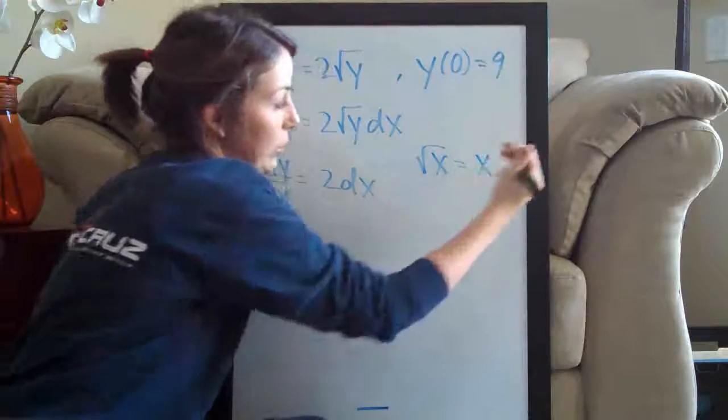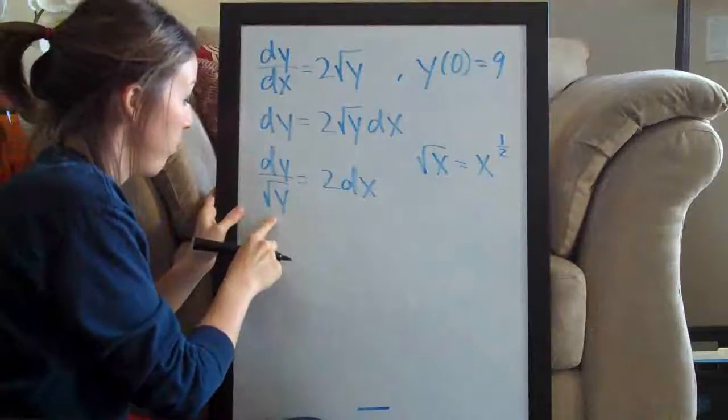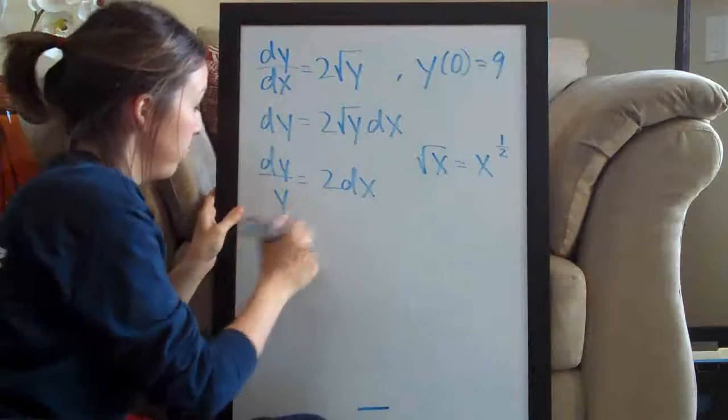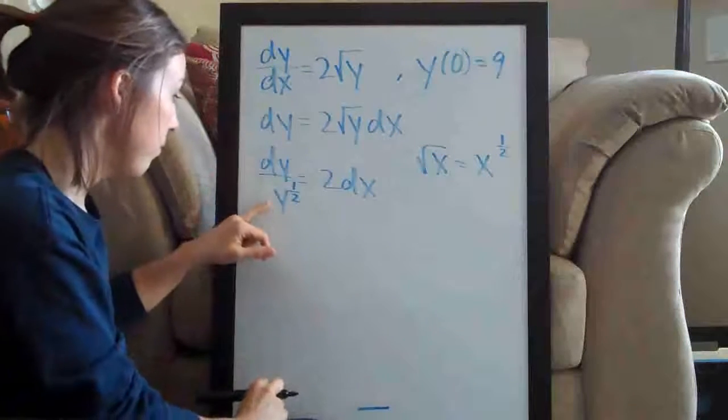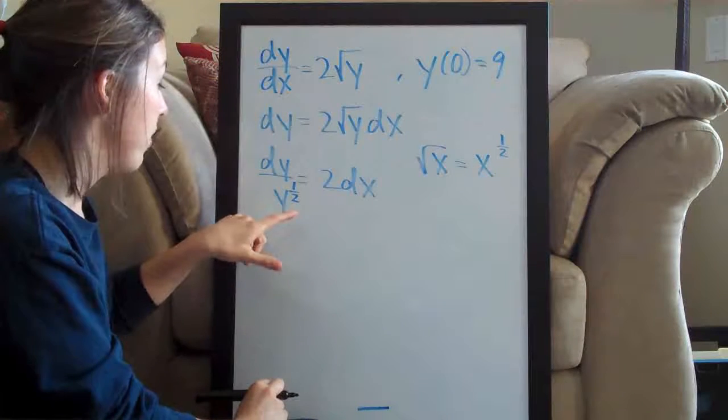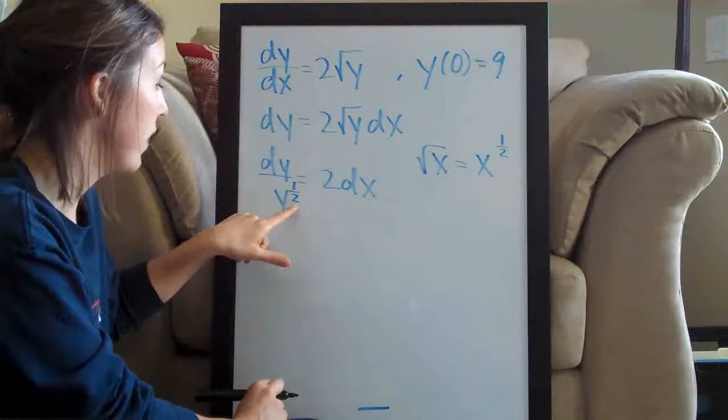So this is actually y to the one half. Let's go ahead and change that, y to the one half. Then of course to move it to the top, all I need to do is change the sign on the exponent. So right now we have a positive one half.